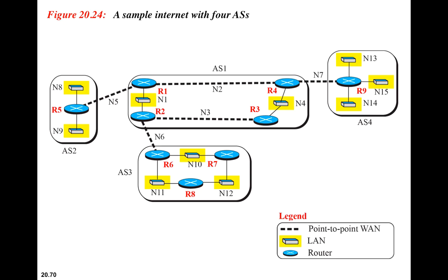We're looking at a sample internet with four autonomous systems: AS1, AS2, AS3, and AS4. These autonomous systems are stub AS, similar to stub networks seen in OSPF — they are at the end and information does not flow through them. Whereas this autonomous system is a transit autonomous system because information flows through it to go to other places.